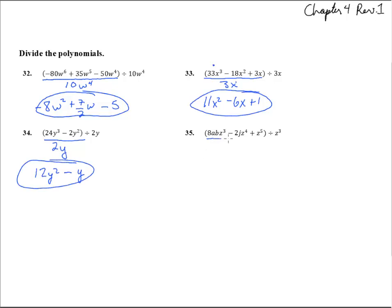Number 35, if we divide everything by z cubed. If you think about it as three separate fractions, that might make it easier. The first cancels out to 8ab, z cubed over z cubed is gone. Minus 2j, and 4 minus 3 leaves the first power there. The last one, z to the fifth over z cubed - we subtract those exponents and get z squared.